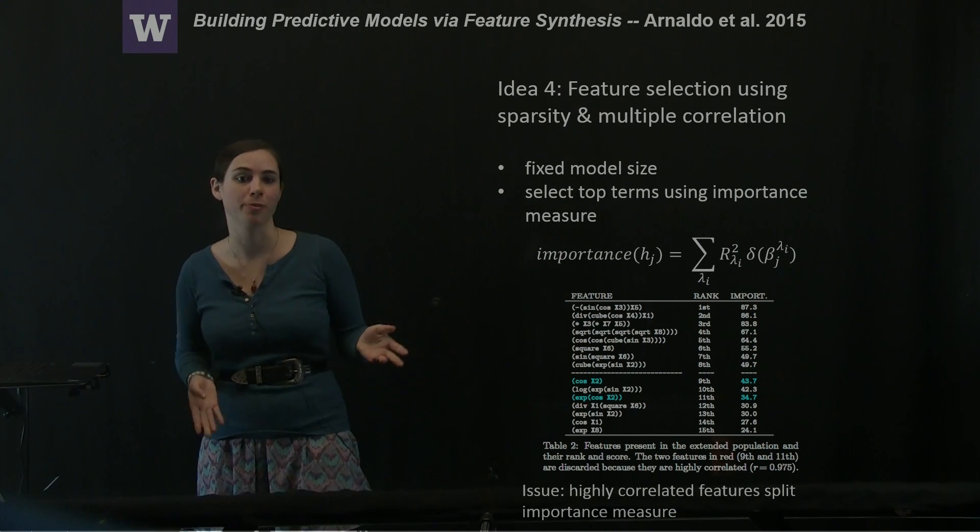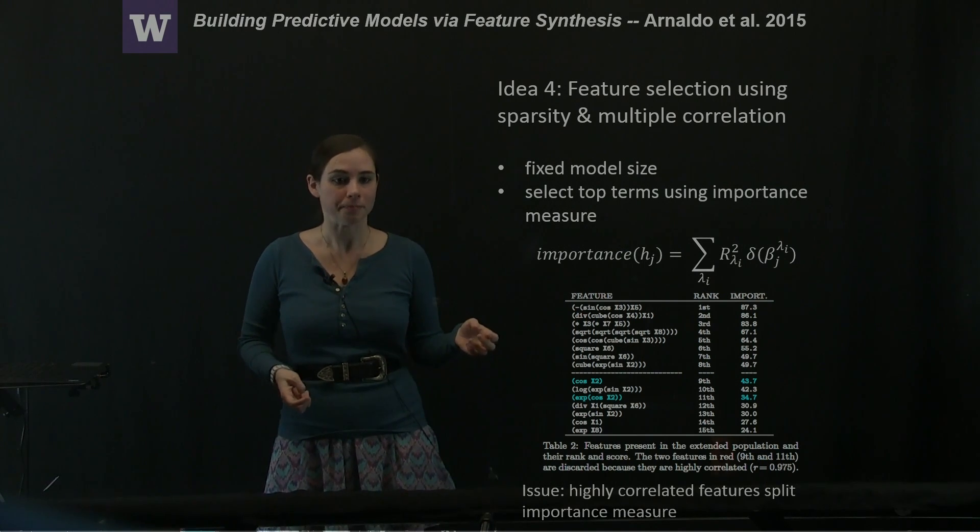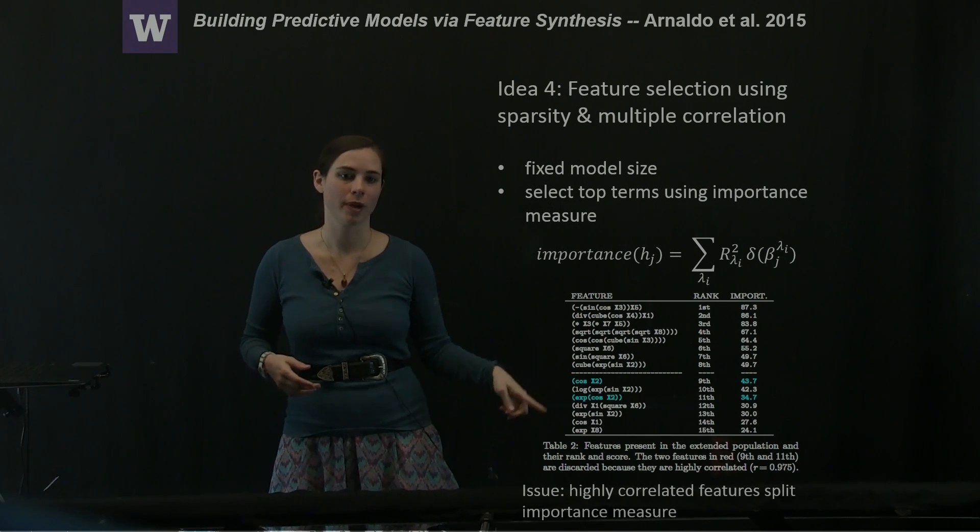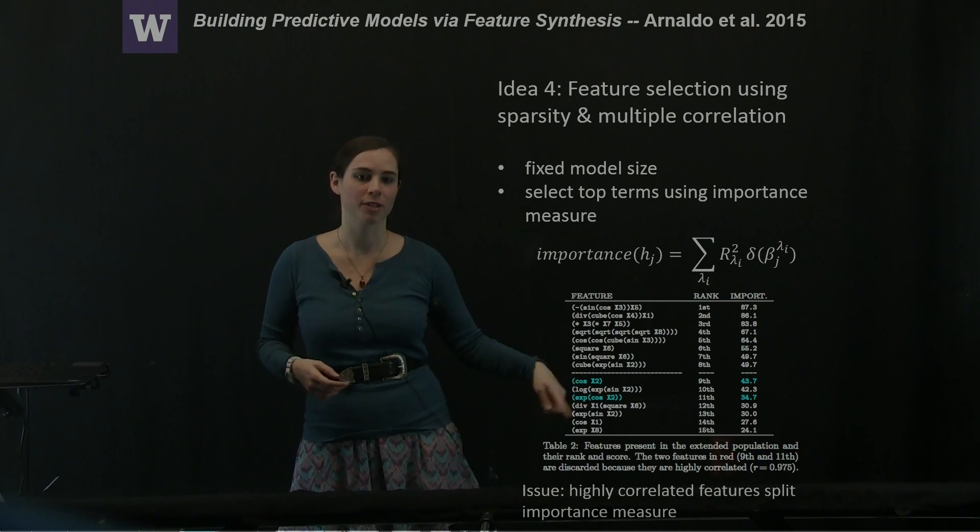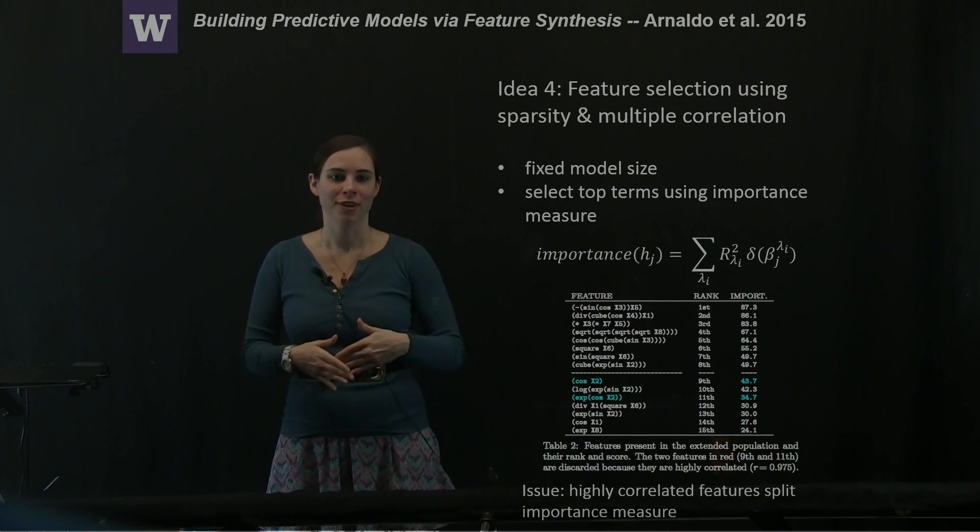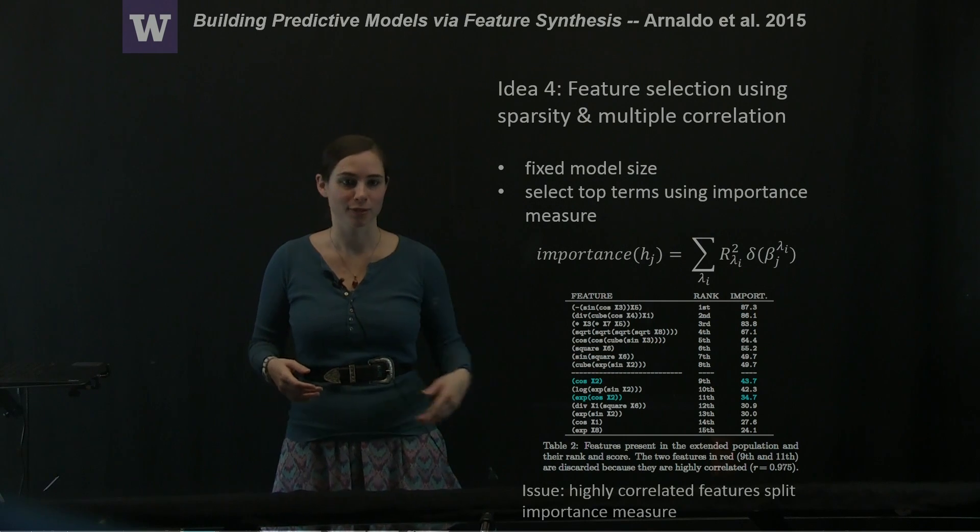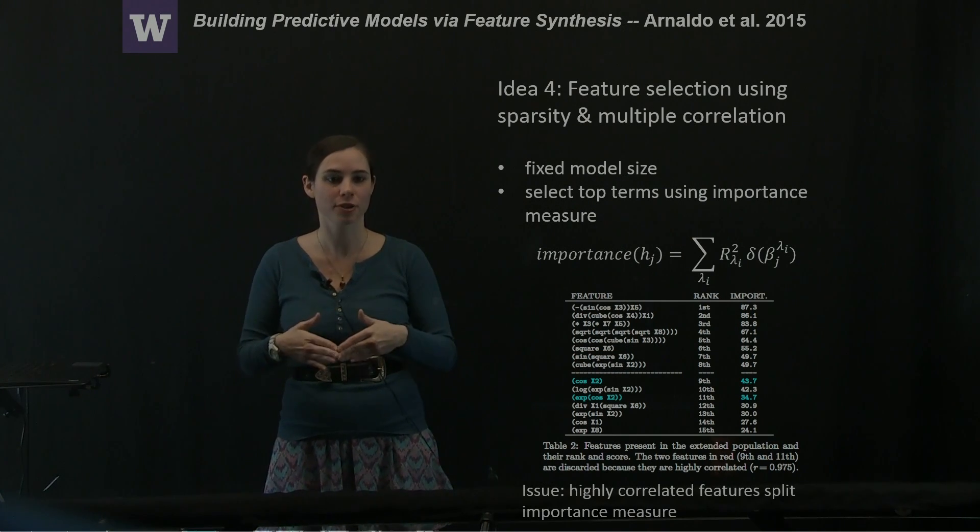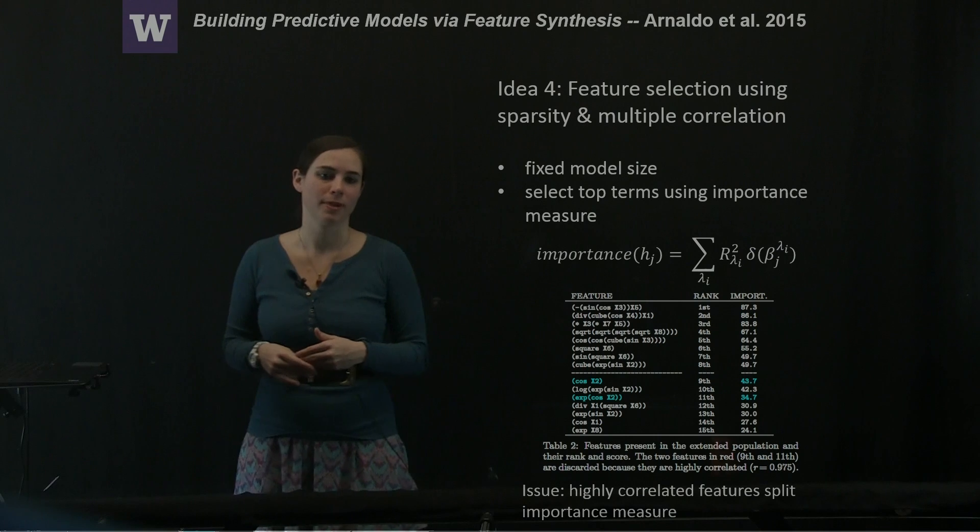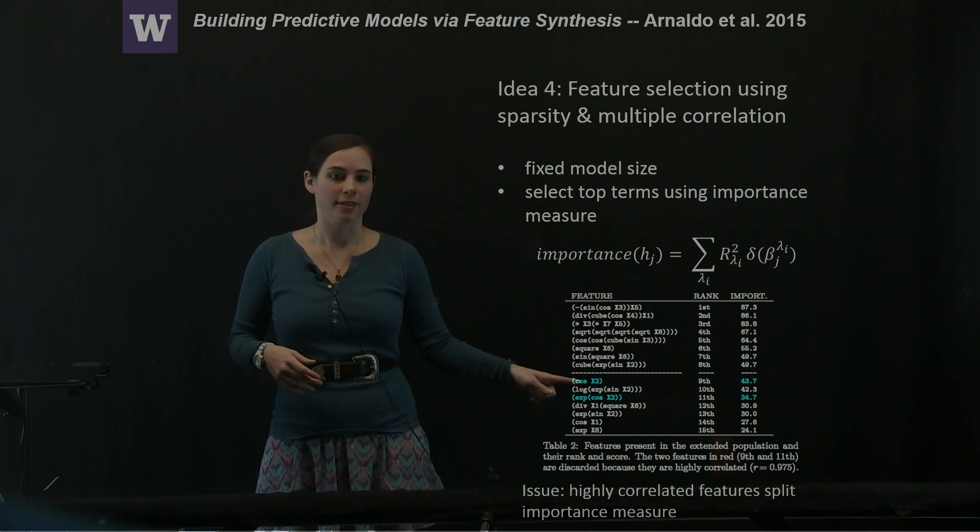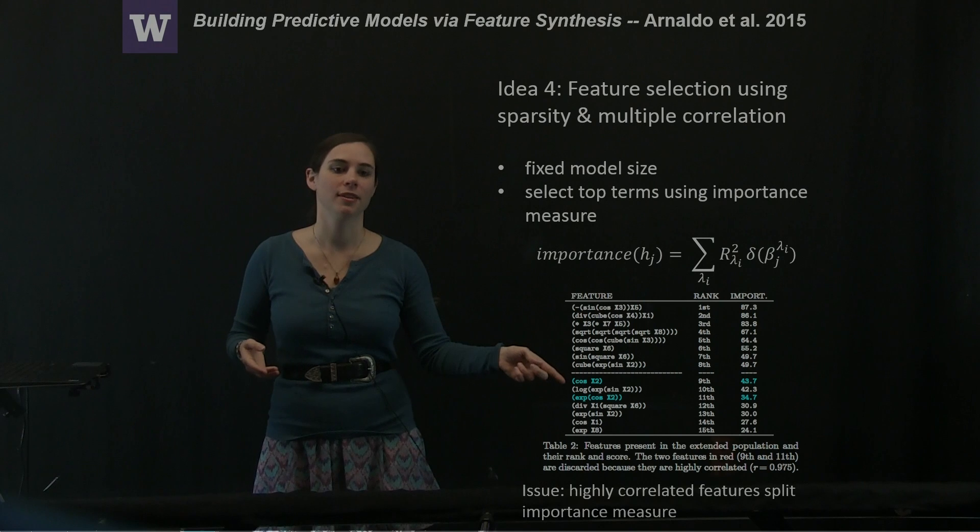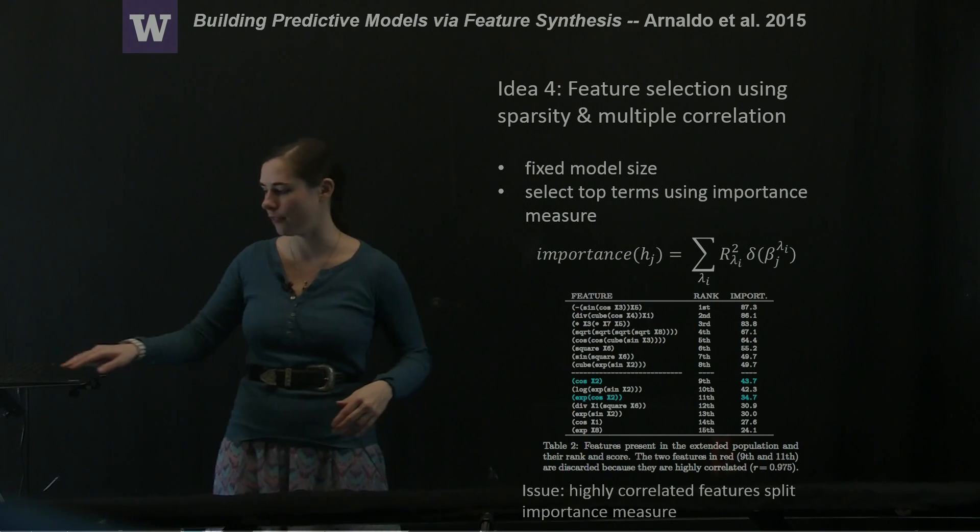Now one of the issues that comes up when you use this sort of selection is that some features will be highly correlated. For example, cosine x squared and the exponential of cosine x squared are both very similar. In fact, cosine x squared is going to be the linear approximation of the exponent of cosine x squared. Because those two features are so similar, they're actually going to end up splitting the importance measure between them. And so even though, essentially, something that looks like these two features should be important enough to end up before your cutoff, because they're splitting the importance, they end up below the cutoff and thrown out.